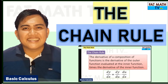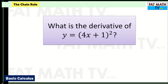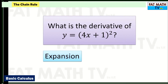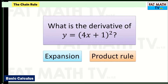In this video we will cover the chain rule. The chain rule is a technique for finding the derivative of functions. For example, if you're asked to find the derivative of y equals (4x + 1) squared, you can either expand it by multiplying (4x + 1) by itself and simplify, then find the derivative of each term.